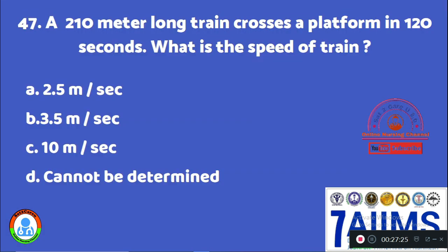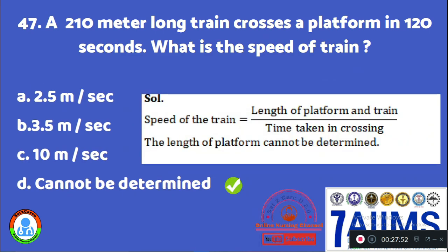Question 47: A 210-meter-long train crosses a platform in 120 seconds. What is the speed of the train? Option A: 2.5 m/s. Option B: 3.5 m/s. Option C: 10 m/s. Option D: cannot be determined. The formula is (length of platform + length of train) divided by time. Since the length of the platform is not given, we cannot determine the speed of the train. The answer is Option D, cannot be determined.